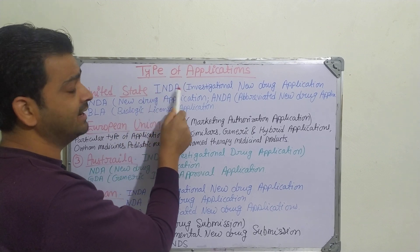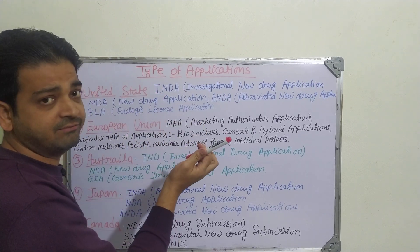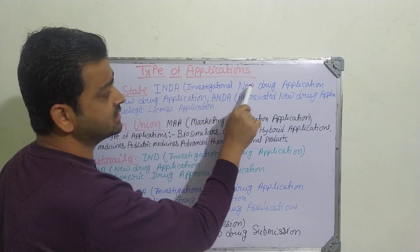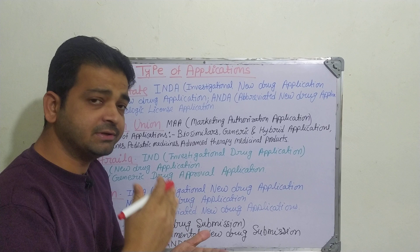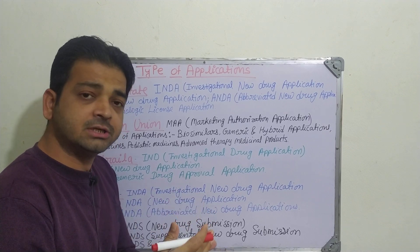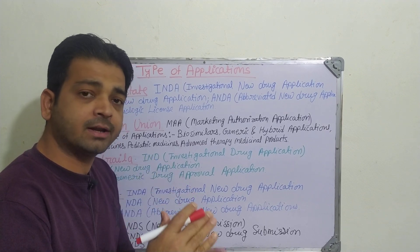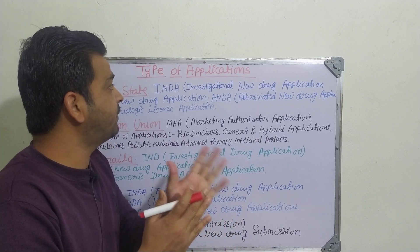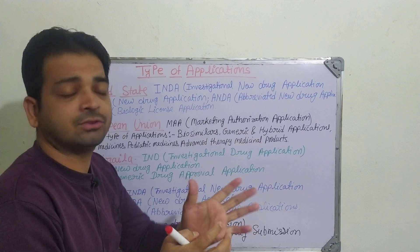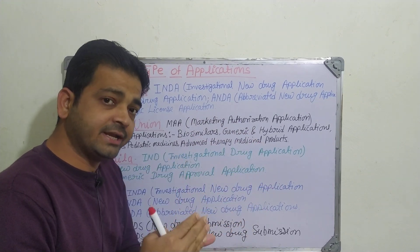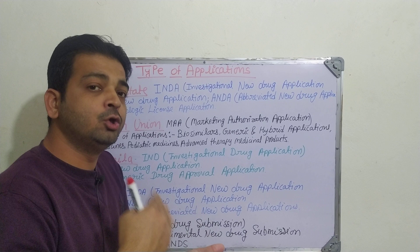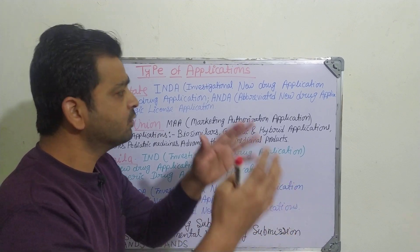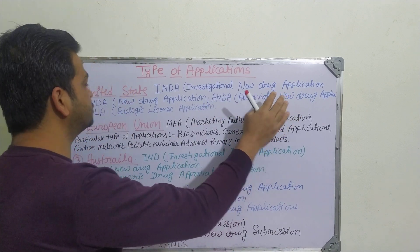In the US, under the FDA, the first application type is the IND — Investigational New Drug Application. Whenever a particular drug shows very good results with a level of significance in pre-clinical stages, whether in vivo or in vitro models, we file the IND. This allows us to get approval for human trials, that is, the clinical trial phases: Phase 1, Phase 2, and Phase 3.